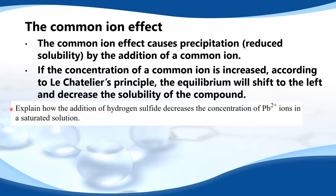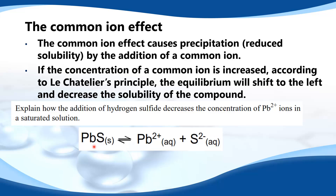Explain how the addition of hydrogen sulfide decreases the concentration of Pb²⁺ ions in a saturated solution. In a saturated solution there's an equilibrium between the solid lead sulfide and the aqueous ions. If we increase the concentration of S²⁻ ions — the sulfide ions — and they come from the hydrogen sulfide, then according to Le Chatelier's principle, the equilibrium will shift to the left.